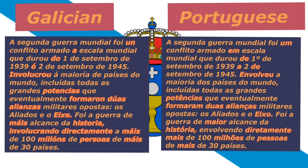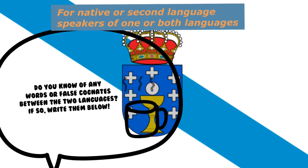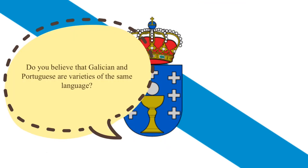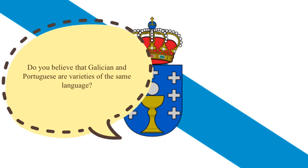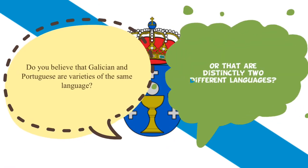The main differences between Portuguese and Galician are mostly phonetic. Mutual intelligibility exists to a large extent, even with Brazilian Portuguese speakers. Do you know any words that are completely different between Portuguese and Galician? Do you believe that Galician and Portuguese are varieties of the same language, or that they are different? Share your thoughts in the comments below.